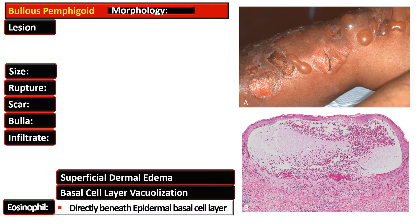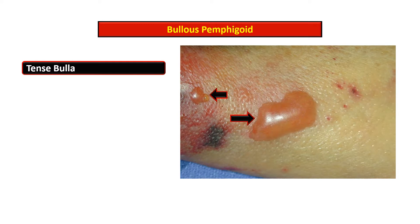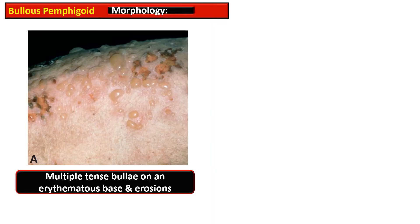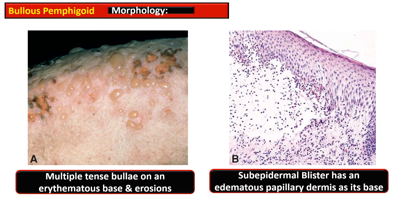Bullous pemphigoid is characterized by the presence of tense bullae. In this picture you can see two bullae — one larger and one smaller — pointed by arrows, common on flexural regions such as axilla, groin, forearm, and abdomen. Here you can see multiple tense bullae with erythematous bases; some bullae have ruptured and formed erosions.